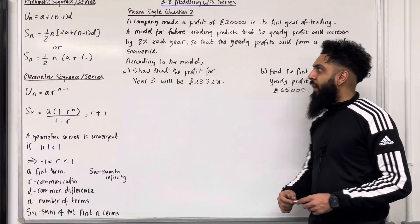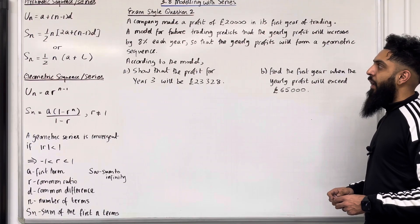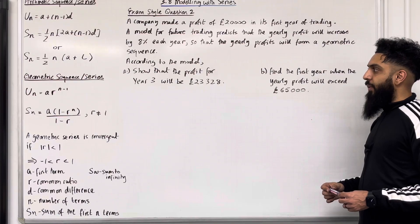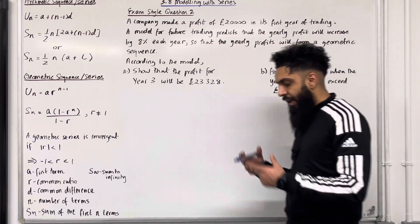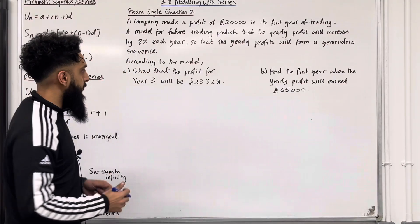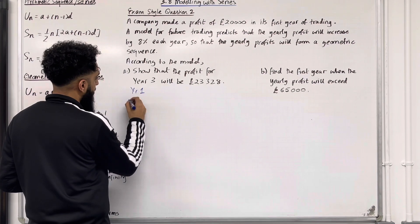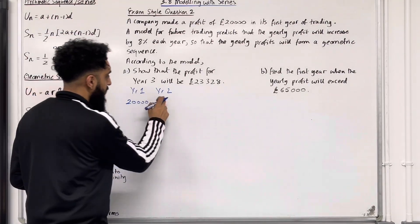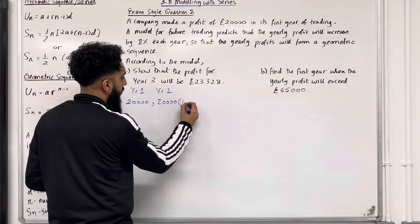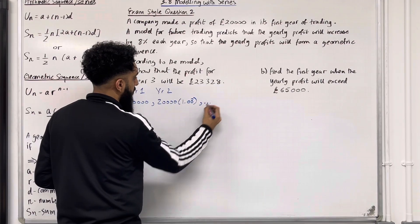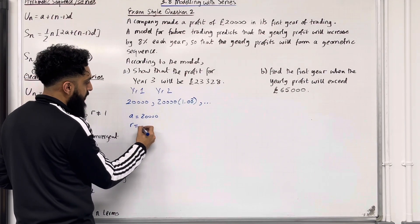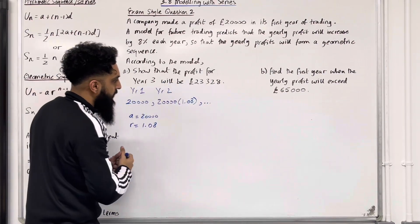Here is exam-style question 2. A company made a profit of £20,000 in its first year of trading. A model for future trading predicts that the yearly profit would increase by 8% each year, so that the yearly profits will form a geometric sequence. Writing down the first few terms: year 1 profit is £20,000; year 2 profit is £20,000 × 1.08, and so on. So we have a geometric sequence with A = £20,000 and common ratio R = 1.08.